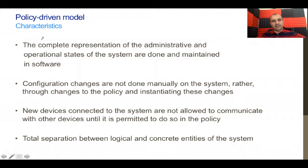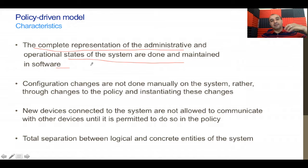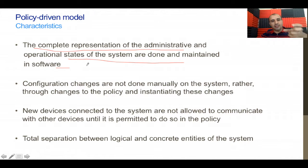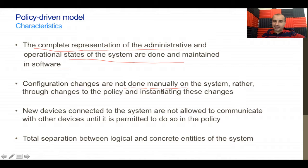Characteristics of the policy-driven model: the complete representation of the administrative and operational states of the system are maintained in software. The policy itself is nothing but software — you configure through the GUI or through APIs using an orchestration tool. The entire state of the infrastructure is now in software, and configuration changes are not done manually, which brings us closer to what the cloud expects: minimal human involvement.